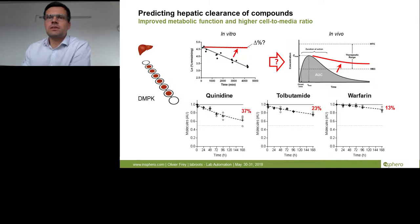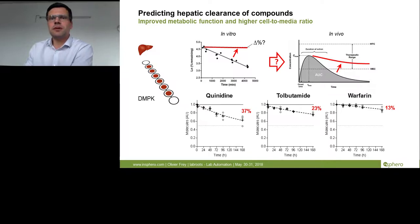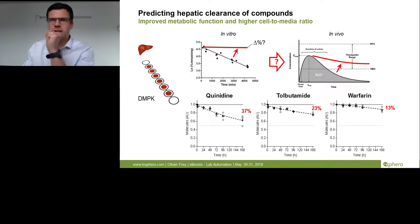Three compounds — quinidine, tolbutamide, and warfarin — are very low-clearance compounds that usually have difficulties being predicted in in vitro assays. First results show that using this system with multiple microtissues in a very small volume, we are able to see clearance down to 37%, 23%, and 13%. With these values, you have the capability to predict the clearance of these compounds in vivo.